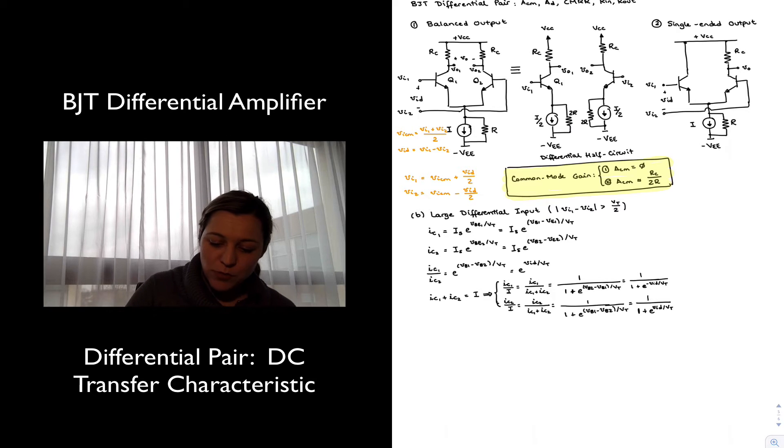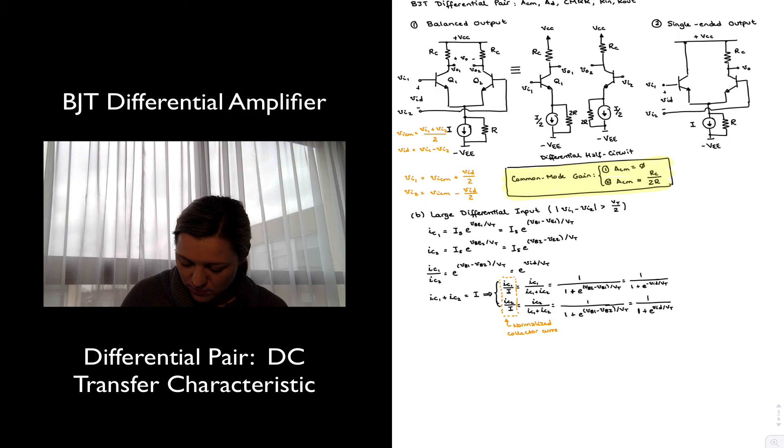All right, the reason why these expressions are important is because now, notice that these were my normalized currents, they're normalized by the current, the overall current I, so these are normalized expressions for the collector current, and they are expressed in terms of the ratio VID over VT, which we consider to be the normalized input voltage. So we normalize the current by dividing it by the overall current I, and the normalized input voltage by dividing by VT, because VT kind of is an important quantity in determining what is a large signal versus a small signal, which is a small signal.